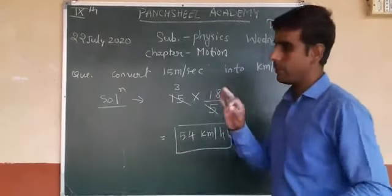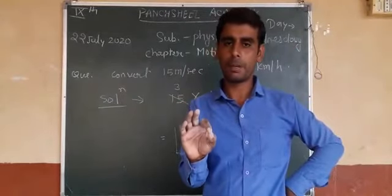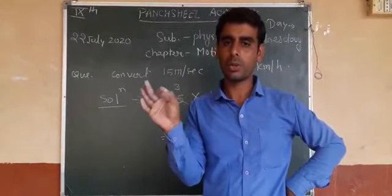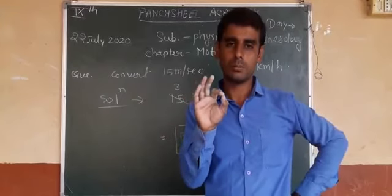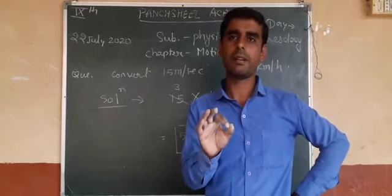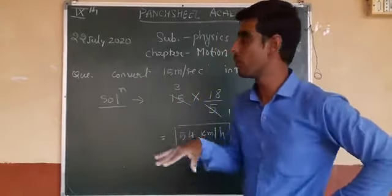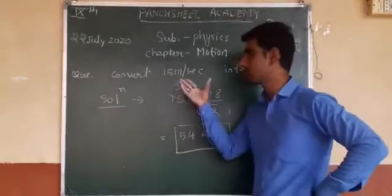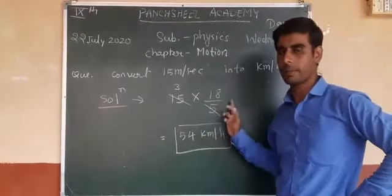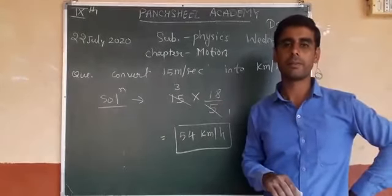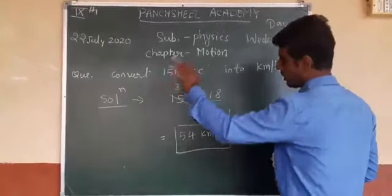To summarize: if you want to convert kilometer per hour into meter per second, multiply the given value by 5/18. And if you want to convert meter per second into kilometer per hour, multiply by 18/5.